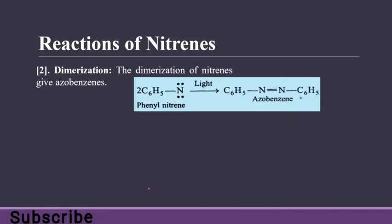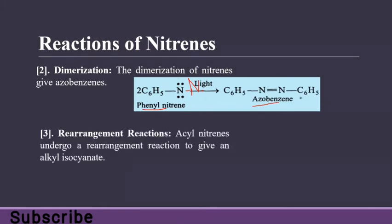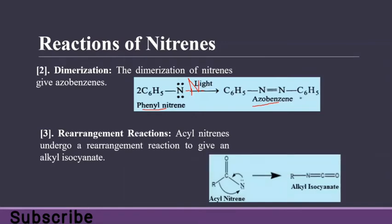Dimerization: the dimerization of nitrines gives isobenzene. If two phenyl nitrines react, both nitrogen molecules attach to the same molecule in the presence of light, giving isobenzene. Rearrangement also occurs in nitrines, where an alkyl group migrates to nitrogen, nitrogen forms a double bond with carbon, and then we have alkyl isocyanide. This is rearrangement by migration of the alkyl group toward nitrogen with formation of a new carbon-nitrogen double bond.